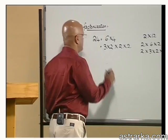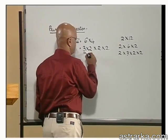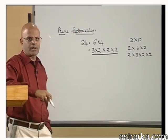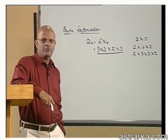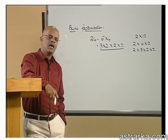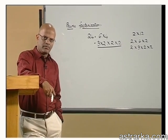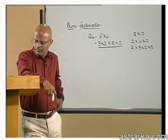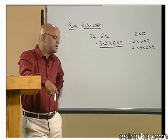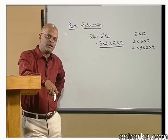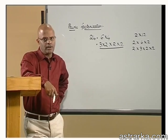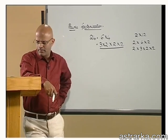Representing a number as a product of prime numbers — prime factors — is called prime factorization. If a number is written as a product of prime numbers, we say we get the prime factorization of the number. The prime factorization of 24 is 2 into 2 into 2 into 3.